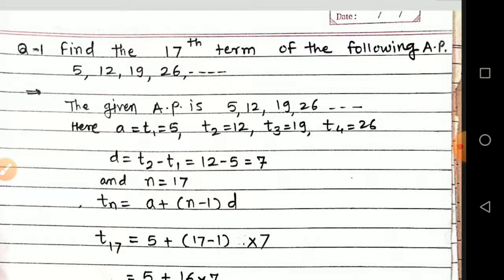It is mentioned in the example that this is an AP, and in AP the common difference is constant. That is why I am finding the common difference: d is equal to T2 minus T1 is equal to 12 minus 5 is equal to 7.